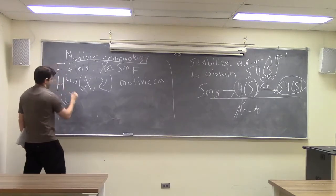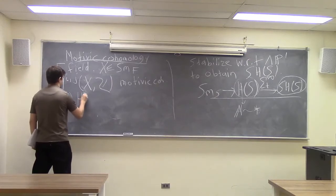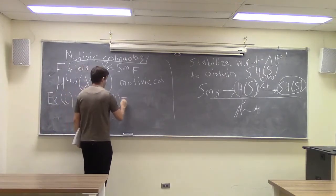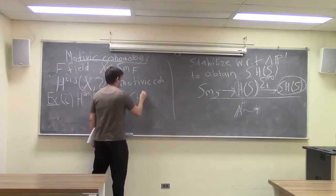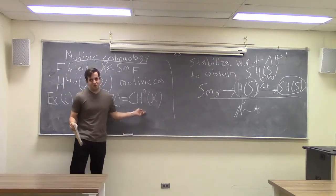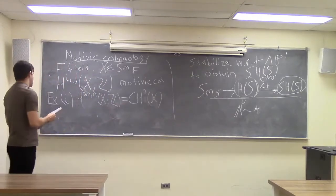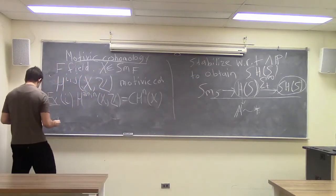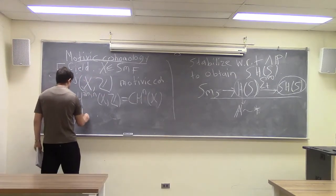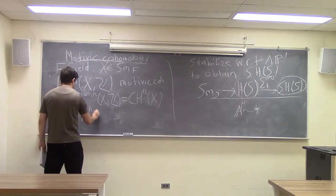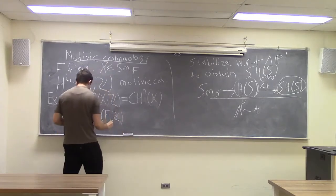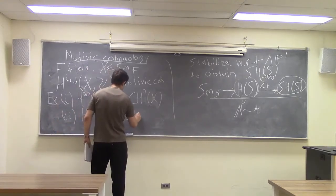If you consider things in bidegree (2n, n), you recover Chow groups of codimension n. And for some other examples of motivic cohomology groups, if you look at the motivic cohomology of a field F, this is isomorphic to the Milnor K-theory.